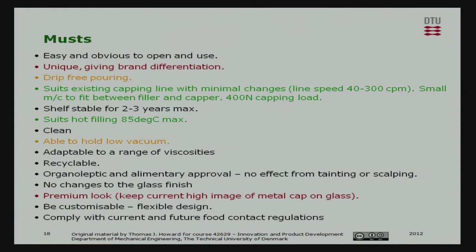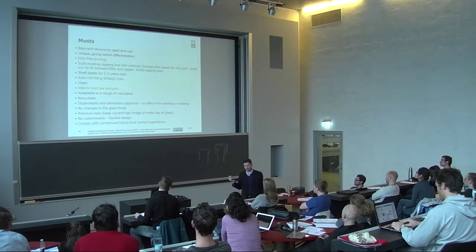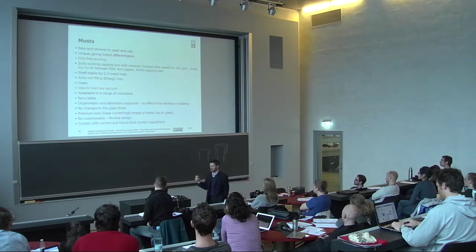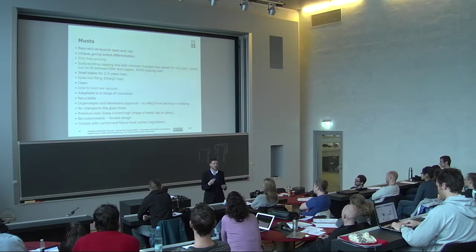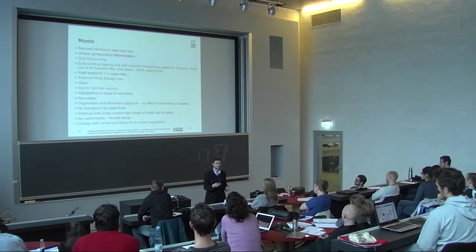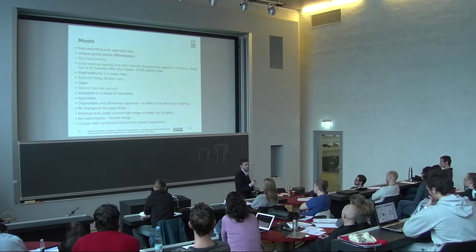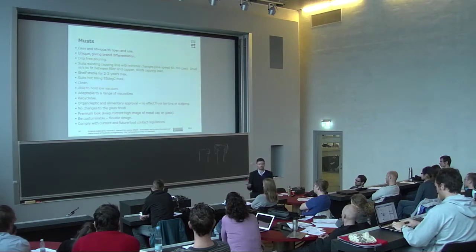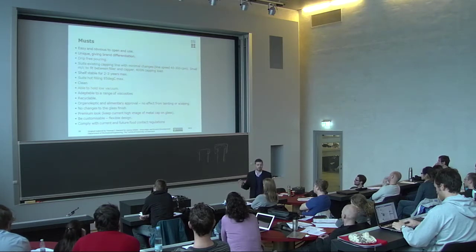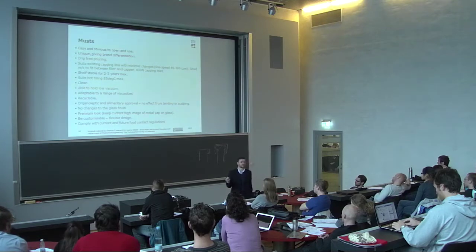A question was asked about organometrics and scalping or cleaning. These relate to tainting of the product. For example, some plastics may be toxic, or when heated may give off certain odors, which can damage the product inside the bottle — you don't want to taste the plastic. Organometrics and scalping are types of tainting of the product.